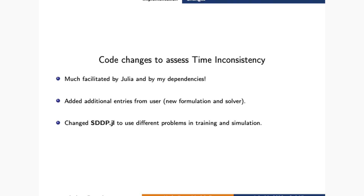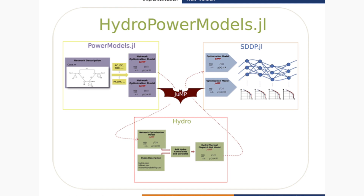I'm very thankful to Julia and my dependencies, which made code changes and extensions very easy. The first thing we had to do was add additional entries by the user, so they could pass the formulation they want for the detailed model of reality and the appropriate solver. The second change was modifying SDDP.jl so we could use different problems in training and simulation. The result is a workflow where PowerModels.jl now outputs two models — one related to the simplified model and one to the detailed one. We add hydro constraints to both of them and pass both to SDDP.jl, which uses one for planning and training and one for the simulation of operation.